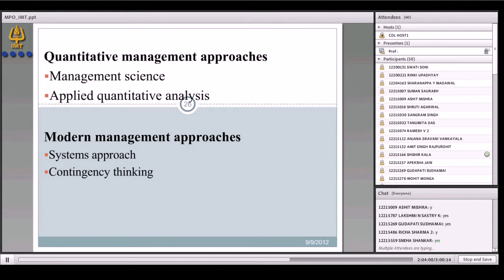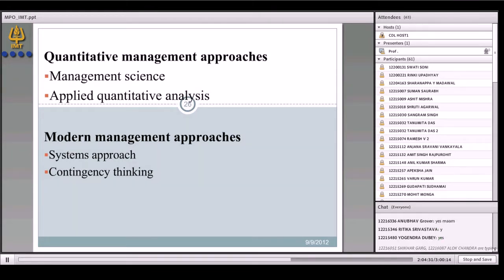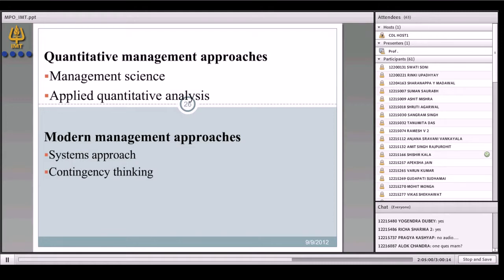The systems approach: see your organization as an input-output system. You have inputs, you have processes - it could be the human related process, marketing process, financial process - and then you have an output. If there is some problem in the output, look at the process. Every industry's input, output, and process are different. You need to analyze and diagnose those before you suggest or recommend solutions.